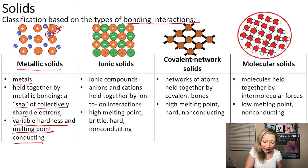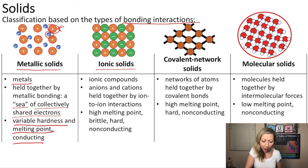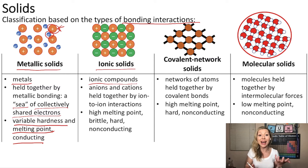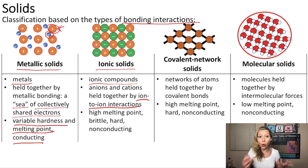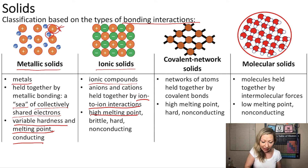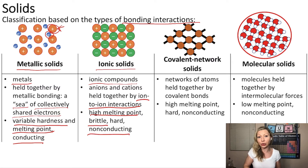Then we can take a look at ionic solids. Ionic solids are composed of ionic compounds in which we have anions and cations held together by ion-to-ion interactions. We are going to have high melting points. These compounds are going to be brittle, hard, and they will not conduct electricity.